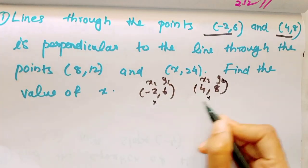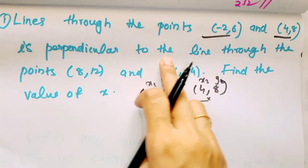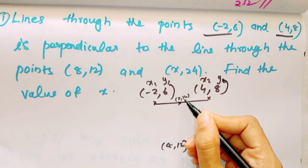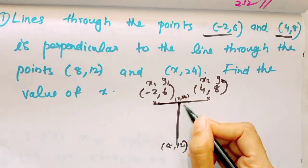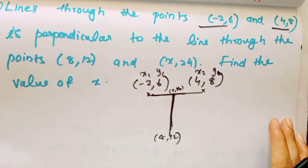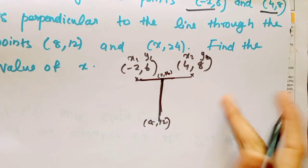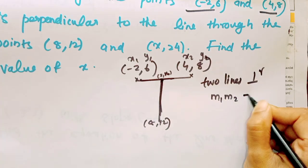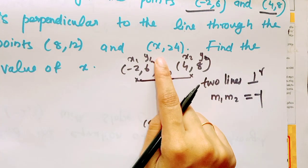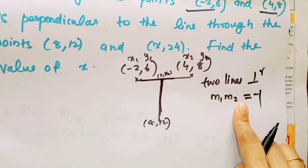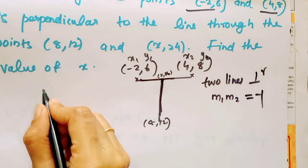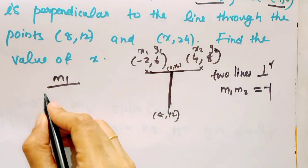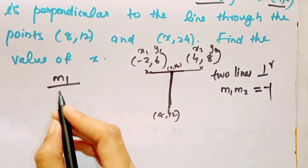These two points are perpendicular to the line. This line is perpendicular to the other line, and that line is also perpendicular. The point X(2,4) is also on the perpendicular line. When two lines are perpendicular, we multiply their slopes. We are going to take m1. m1 is our slope, with points minus 2, 6 and 4, 8.